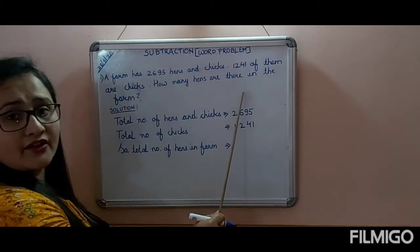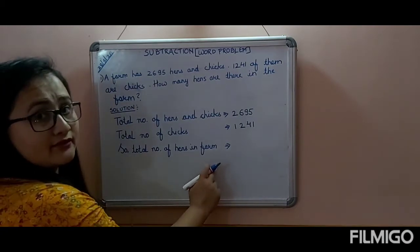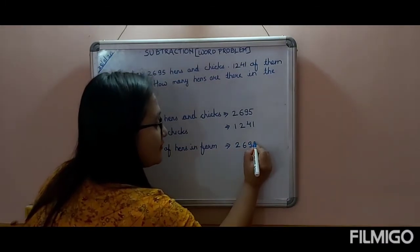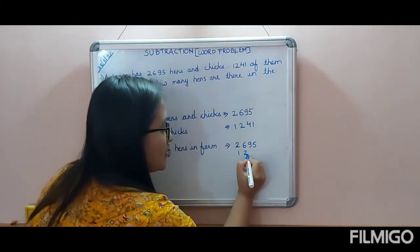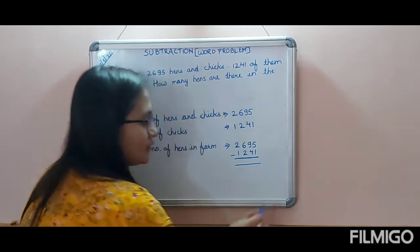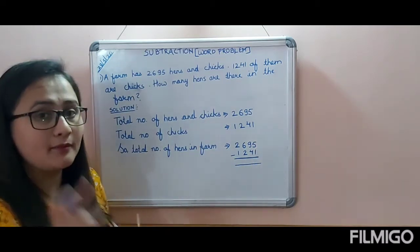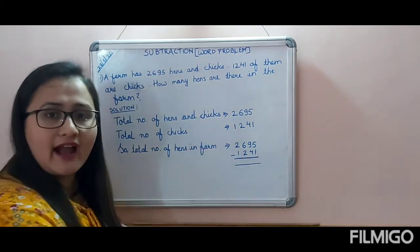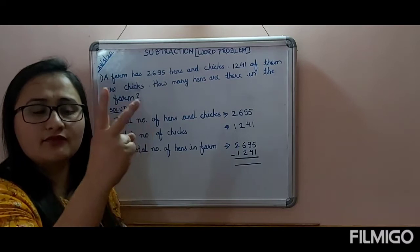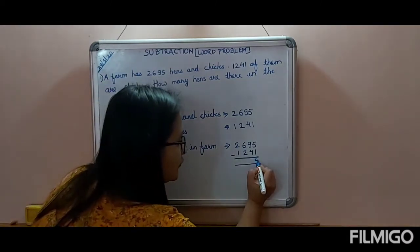What you are asked to find is how many hens are there in the farm. So you write: total number of hens in farm. We have to subtract 2695 minus 1241. As I taught you, you always start subtracting from the ones place. Keep the upper number in your mind — keep 5 in your mind and count after 1: two, three, four, five. That is 4 fingers, so write 4.